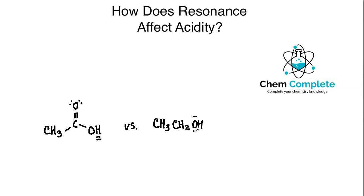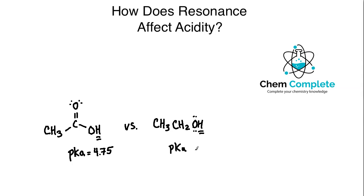These two compounds have similarities in terms of carbon count and the fact that they both have an oxygen containing a hydrogen and can undergo hydrogen bonding. However, they differ significantly in acidity — the carboxylic acid is much more acidic than the ethanol. Remember, pKa like pH is an inverse scale, so the lower the pKa value, the greater the acidity.